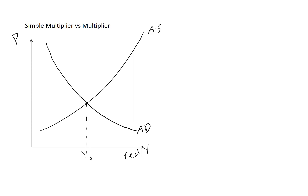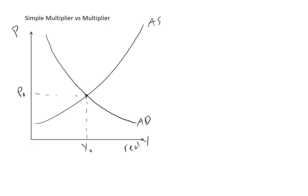We have y0 as our real national output and p0 as our price level. Now let's imagine that government expenditure goes up by five billion dollars. We know from past videos that this causes a horizontal shift to the right of our AD curve by the change in capital A — so five billion times our simple multiplier.